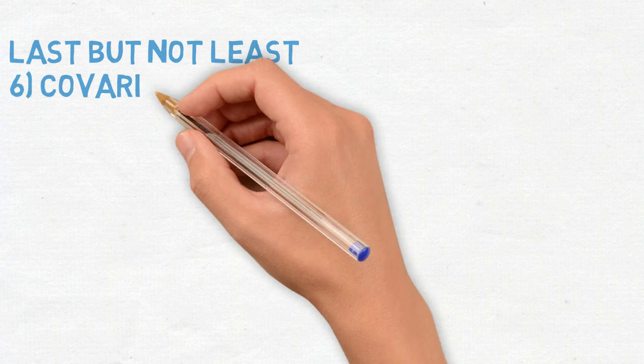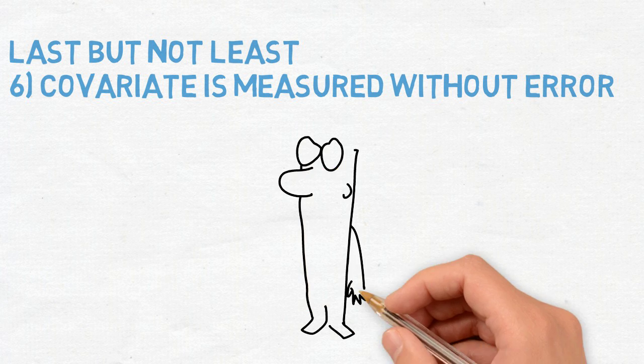Lastly, the covariate should be measured without error. This is especially important with natural groups.